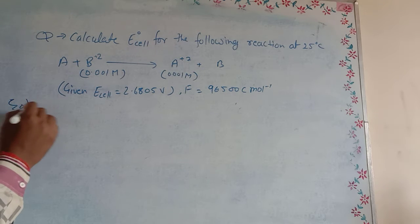This topic is complete. Now for the numerical, dear students: Calculate E°_cell for the following reaction at 25°C. Given E_cell = 2.686V and concentration is 0.001M. For this Nernst equation numerical.